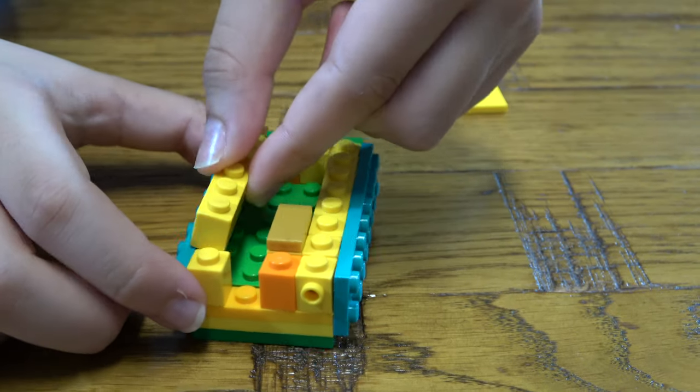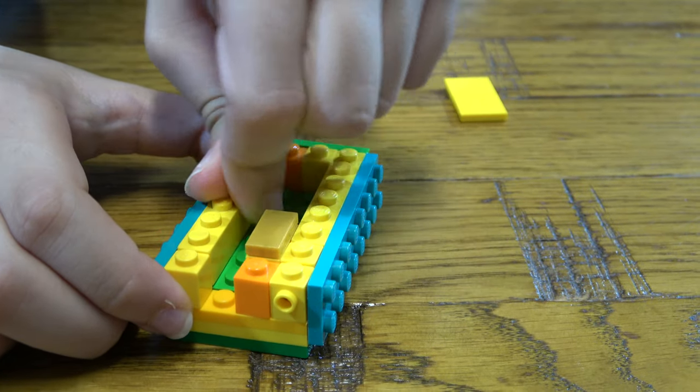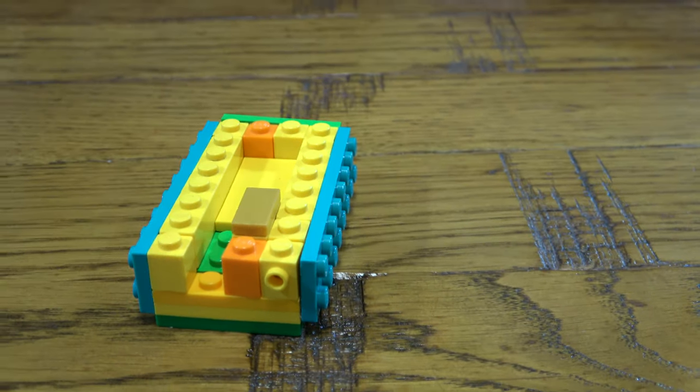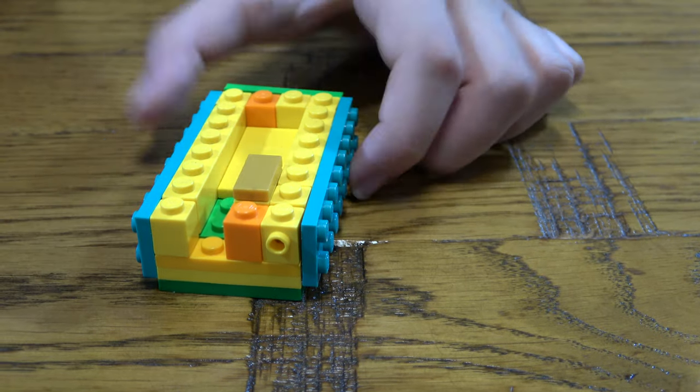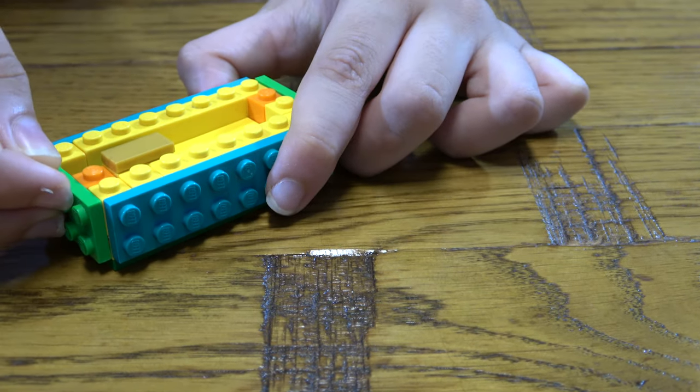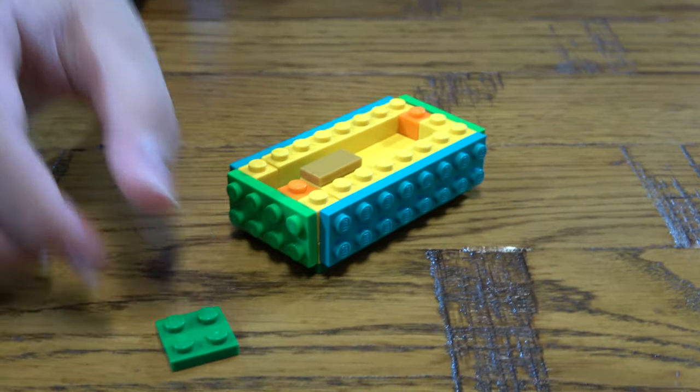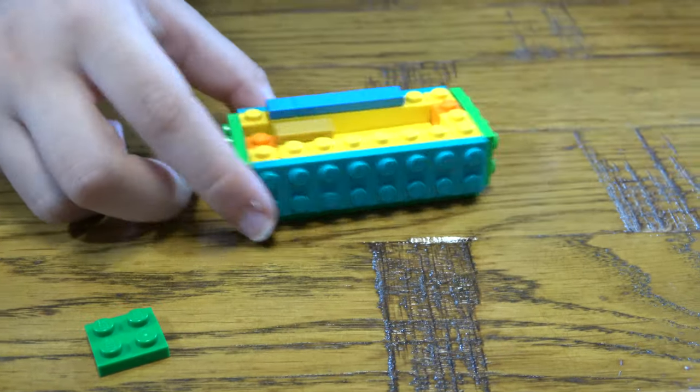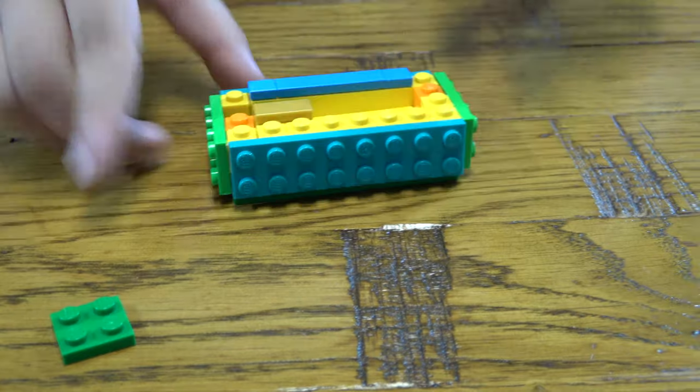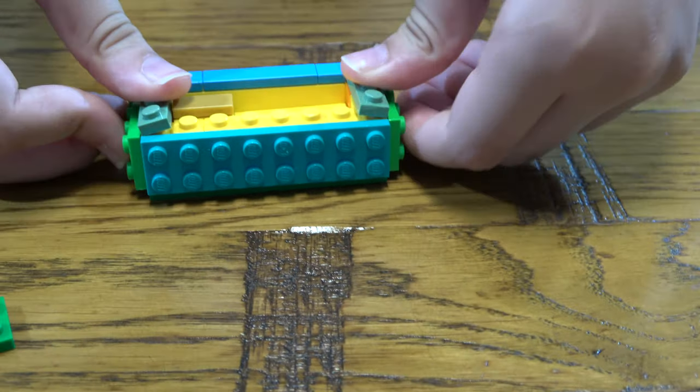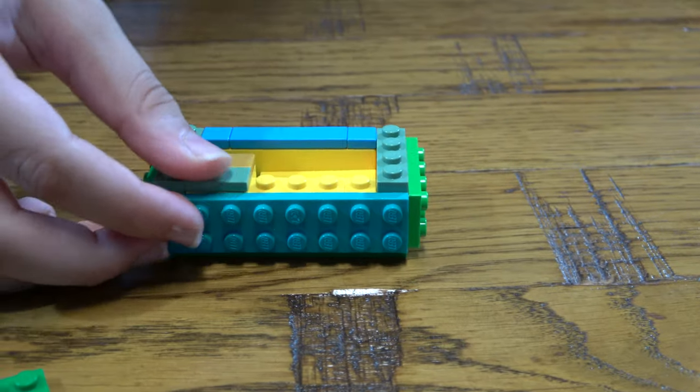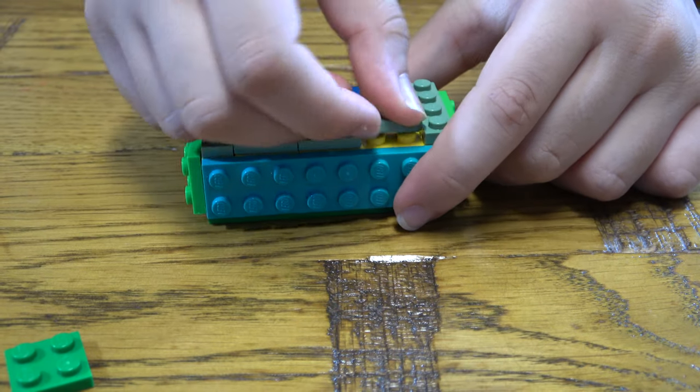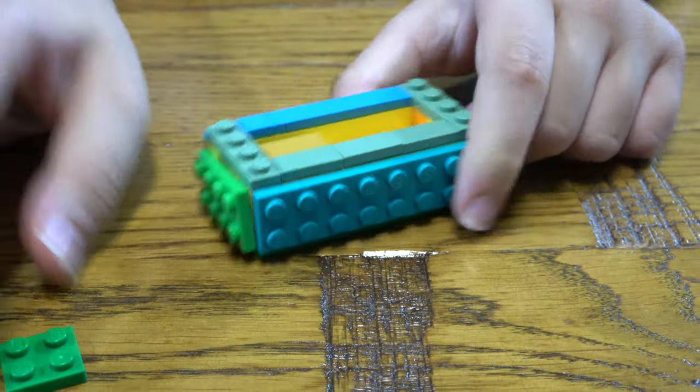Next we get this. We put this here like so. Then we put this onto there. And we then place this here like so. And next we get this. This too. We place two of these on. We place this over here like that. And this goes over here like this.